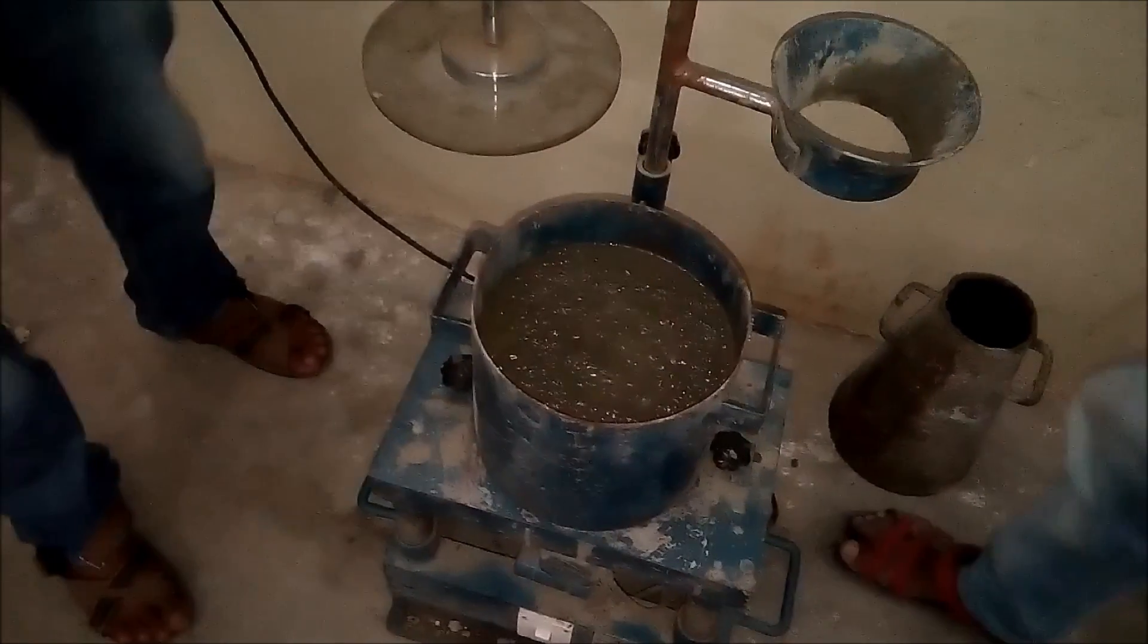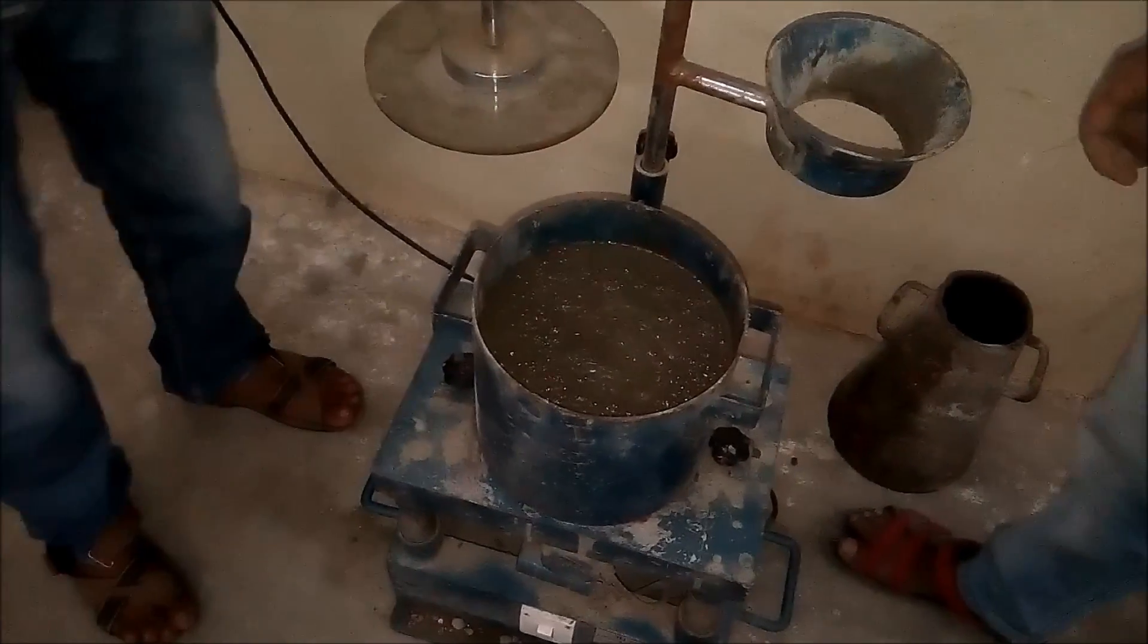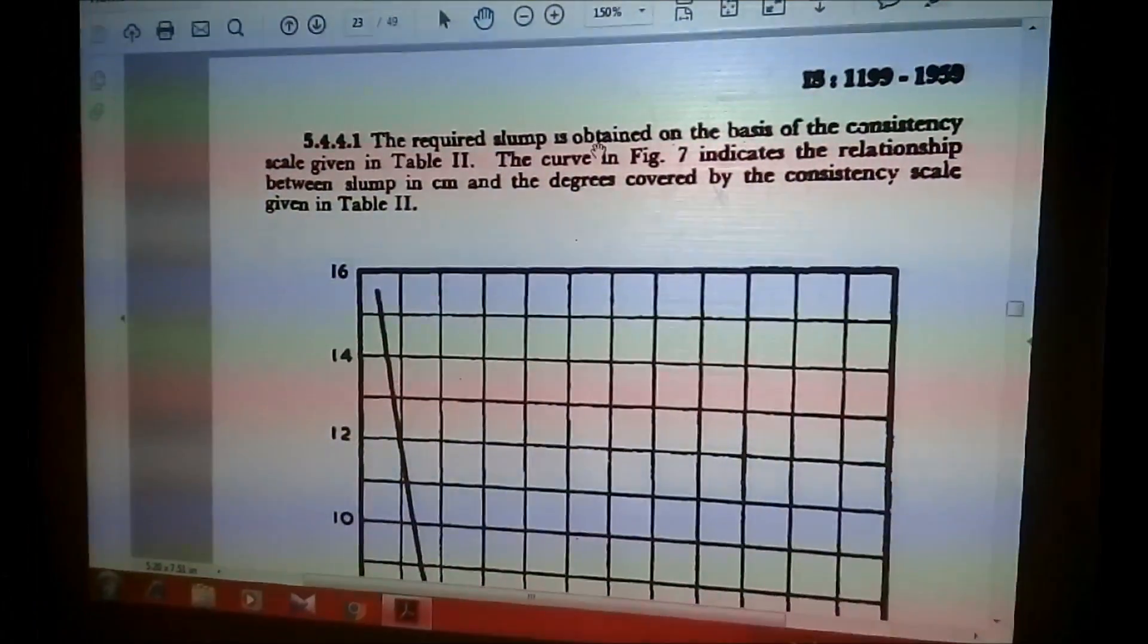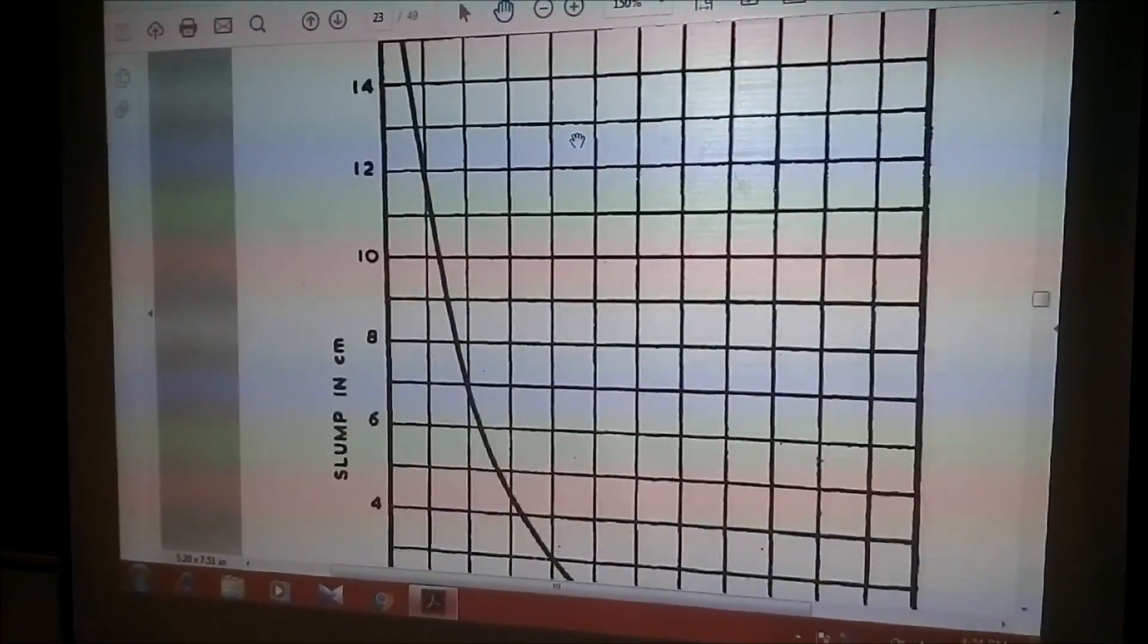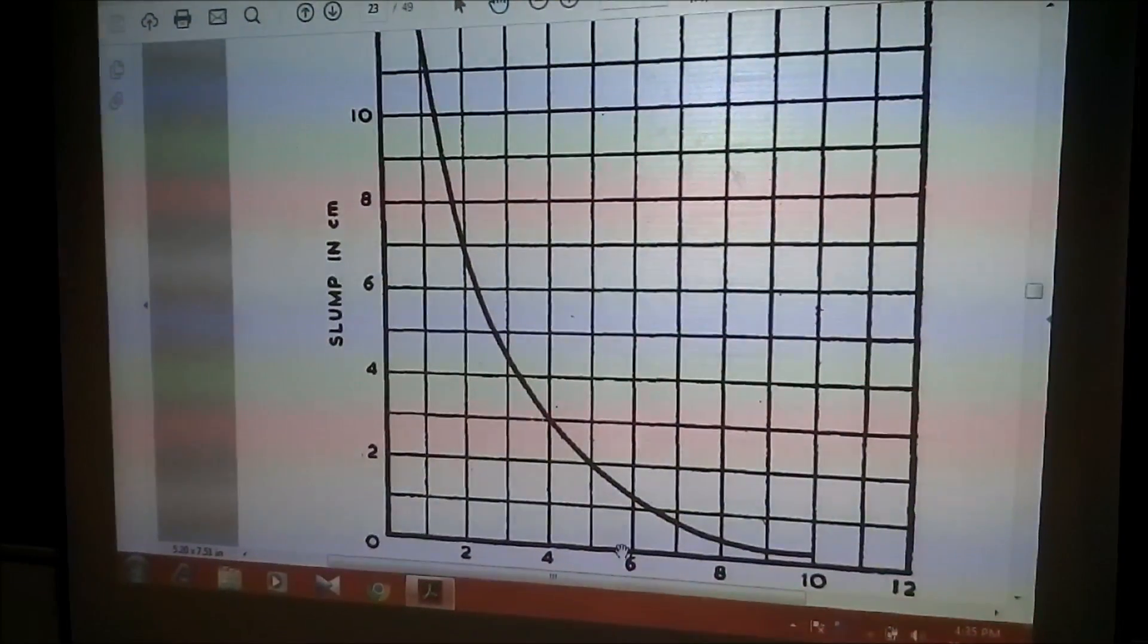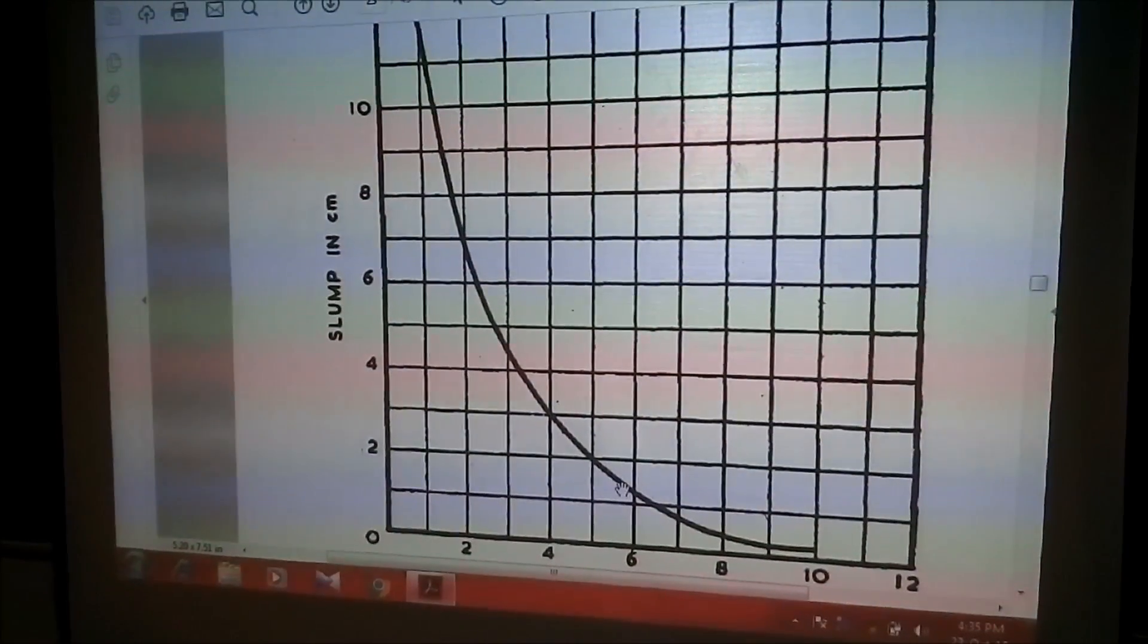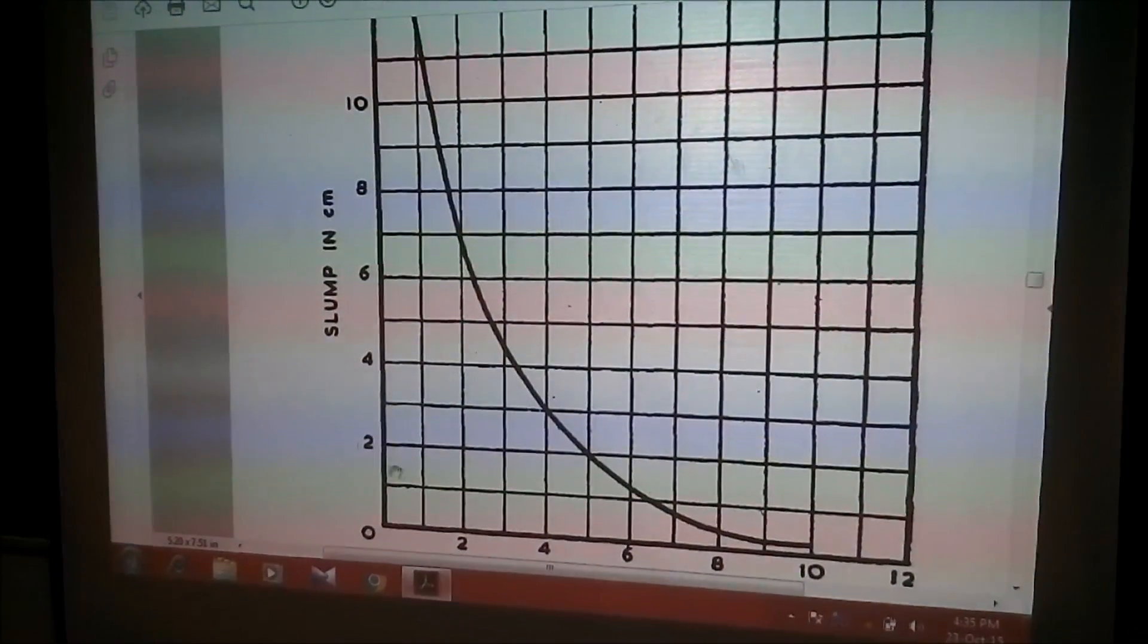And our time for this flatness is 5.9 seconds. That is our VB degree is 5.9. IS 1199 defines the relation between VB degree and required slump. VB degree of our concrete mix is 5.9. For that, required slump is almost 1.5 cm. And our slump obtained is 5 cm.